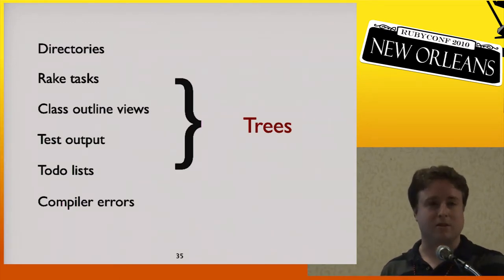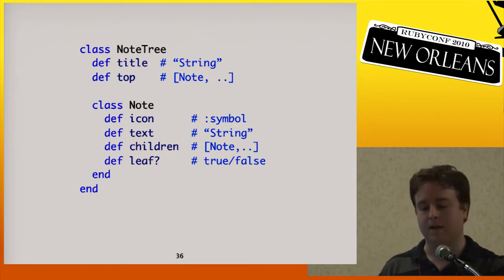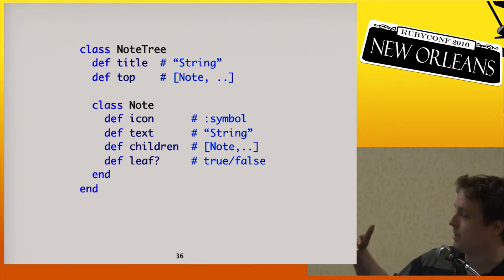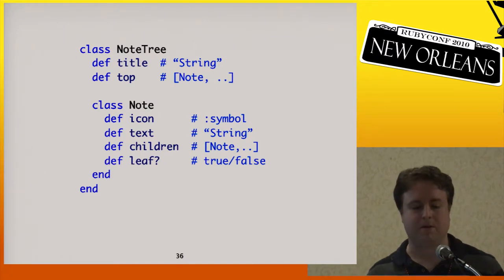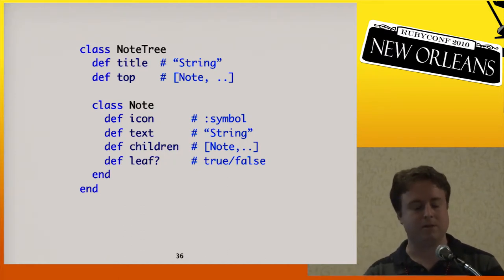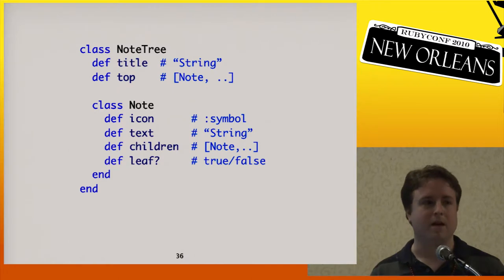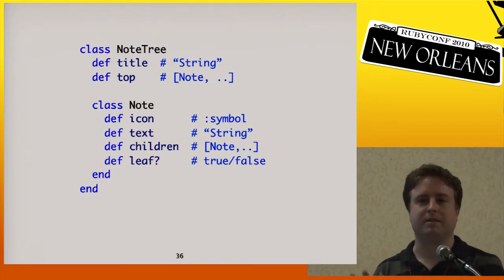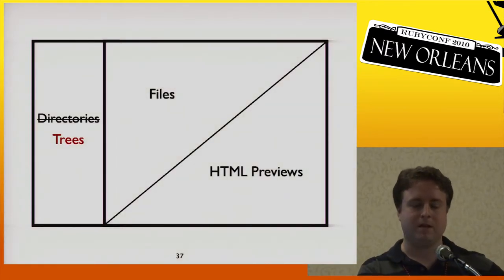To implement a new tree in Redcar, there are two classes to define: a top-level tree with a method called 'top' returning the top-level elements, and then it's a recursive definition. For example, in an imaginary note-taking plugin, each row in the tree is a note with an icon, text, a children method returning more notes, and a leaf method to indicate the bottom of the tree. If you define those two classes and hand them to Redcar, it puts the tree you implemented in the sidebar. So we've generalized this organizational structure to any kind of tree — not just directories.